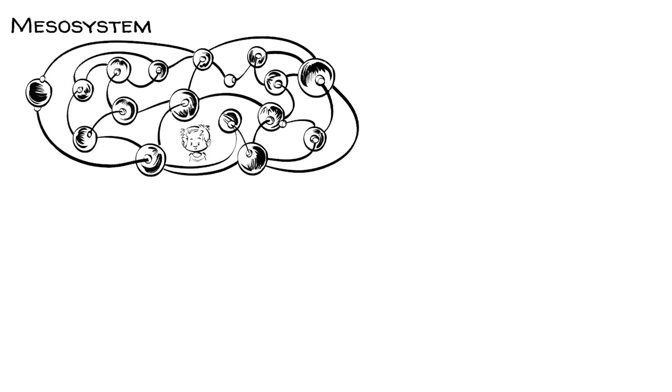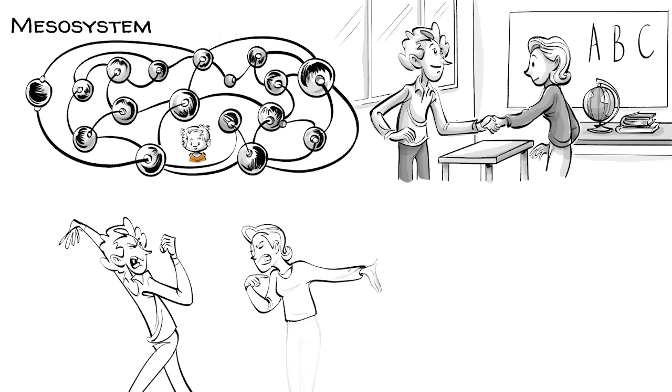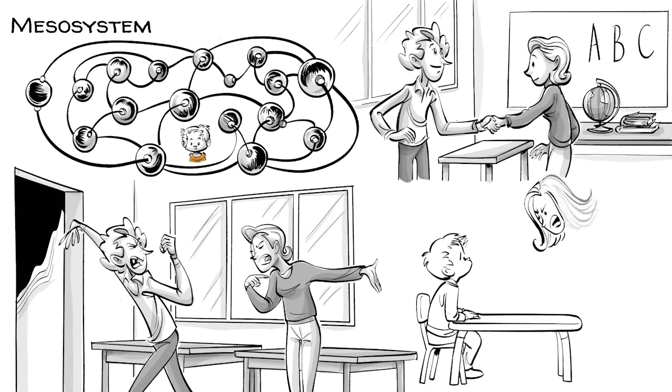The mesosystem represents the interconnections between the elements that surround the child. For example, the relationship between the father and the schoolteachers. If the father doesn't get along with a teacher, the child might suffer.